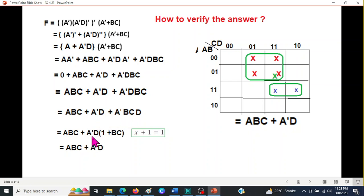And as we did in the last slide, we took A'D common. We get 1 + BC. We use this formula to get the final answer. I hope you have been able to understand how we can solve this type of question.